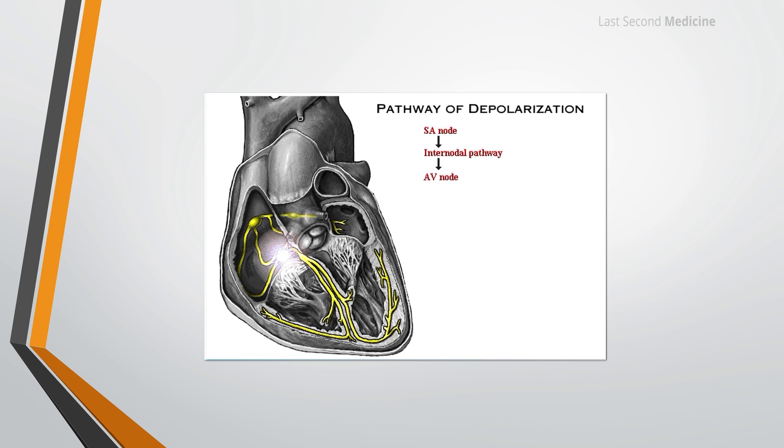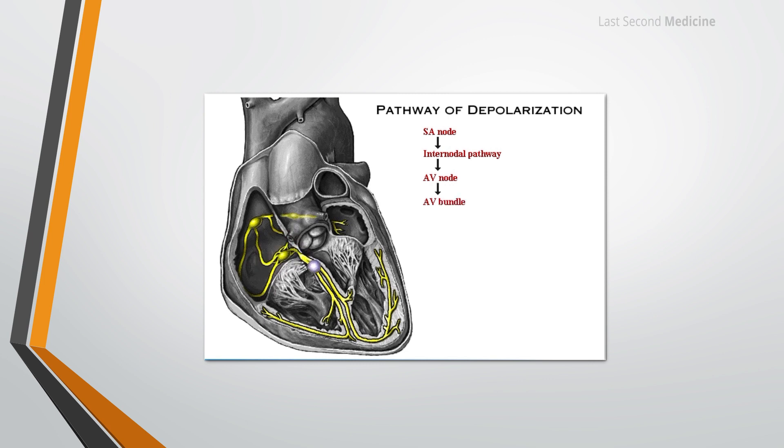Then there is some physiological delay in the AV node, and then ventricular depolarization begins due to spread of the depolarizing wave via the bundle of His, bundle branches and the Purkinje fibers.